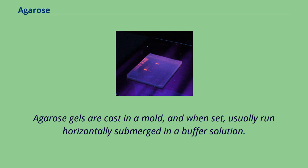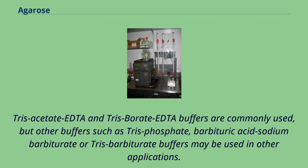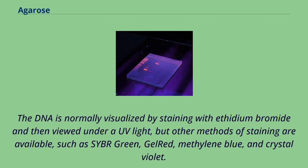Agarose gels are cast in a mold and when set, usually run horizontally submerged in a buffer solution. Tris-acetate EDTA and tris-borate EDTA buffers are commonly used, but other buffers such as tris-phosphate, barbituric acid sodium barbiturate, or tris-barbiturate buffers may be used in other applications. The DNA is normally visualized by staining with ethidium bromide and then viewed under UV light, but other methods of staining are available, such as SYBR Green, GelRed, methylene blue, and crystal violet.